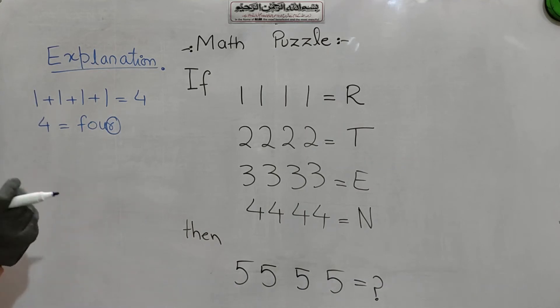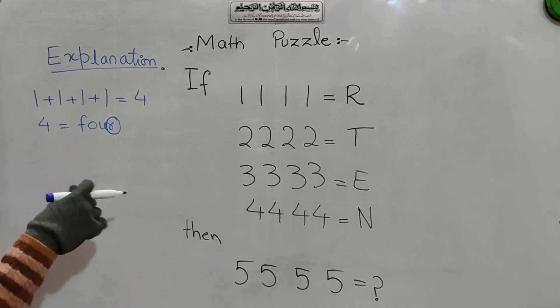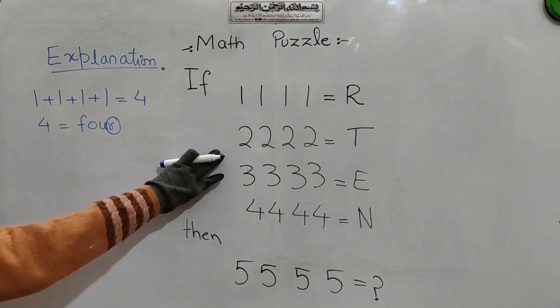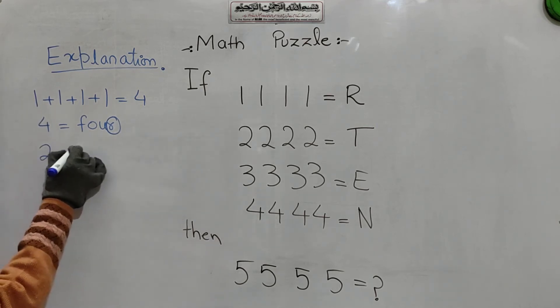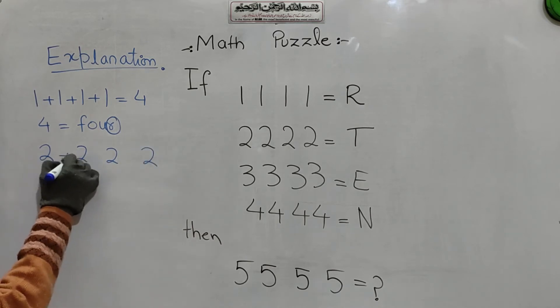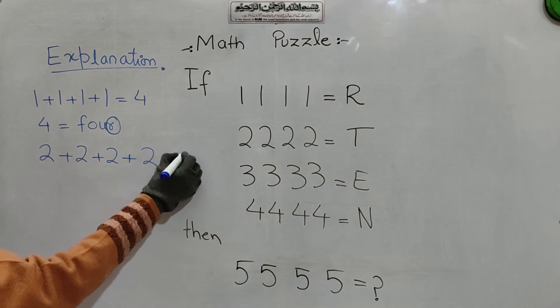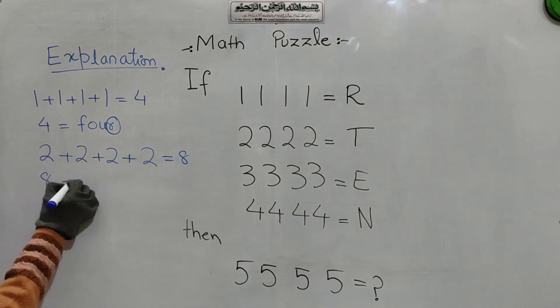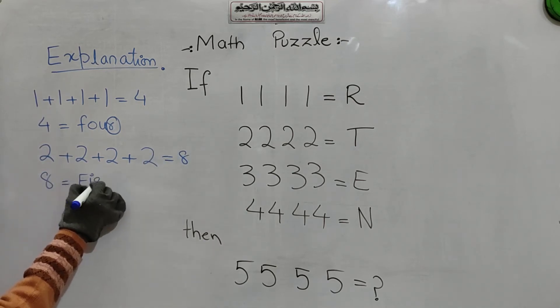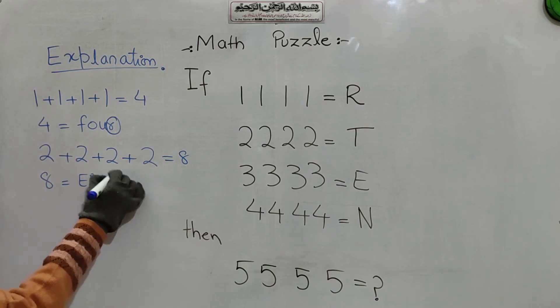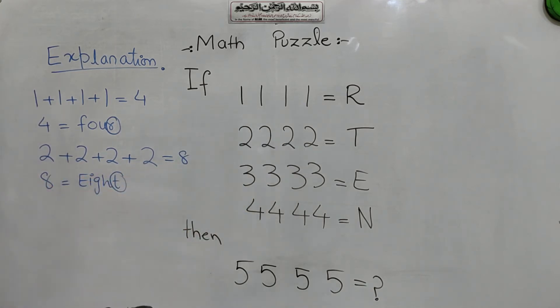So we will see that this puzzle logic is true or not. We will apply the same logic in the second row. 2, 2, 2, 2 and add all these numbers. We get 8. And 8 in spelling is E, I, G, H, T. So we will write T here. So see the magic.